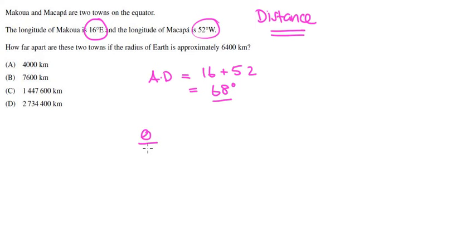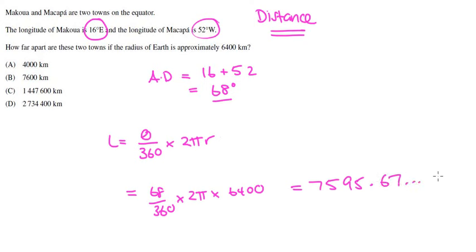My formula that's on my formula sheet is theta over 360 times 2 pi r. That's my arc length. So we've got 68 over 360 times 2 pi times the given length of 6,400 kilometers. Type that into your calculator, and round your answer to the nearest 100 kilometers. My answer comes out to be 7595.67 kilometers. The best answer here would be B, 7,600 to the nearest 100 kilometers.